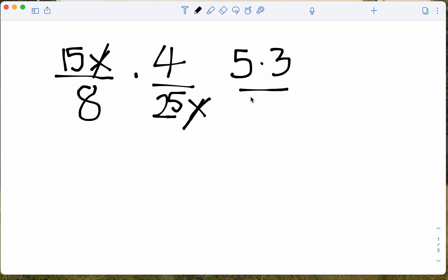And 8 can be simplified into 4 times 2, and we'll put our multiplication sign there. 4 we can leave as is. 25 can be simplified into 5 times 5.